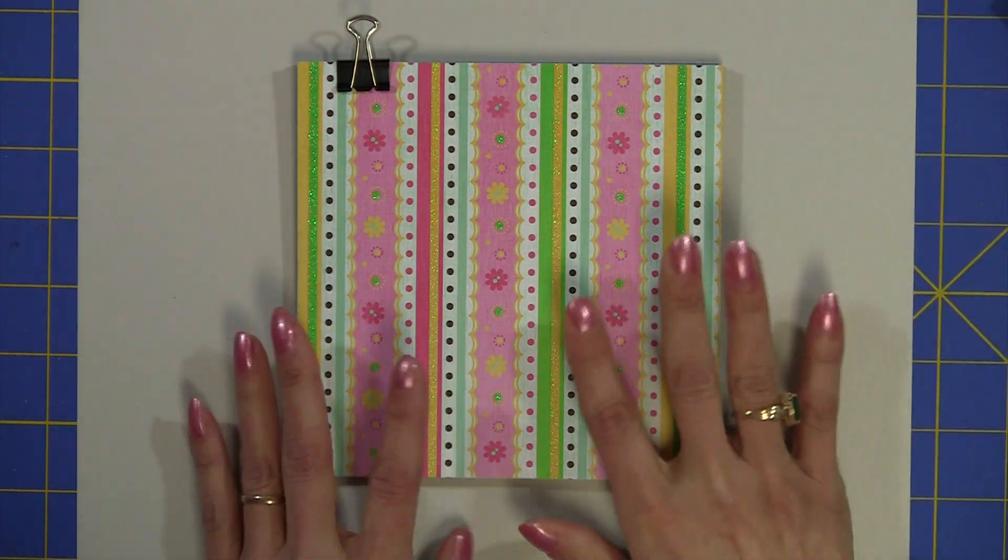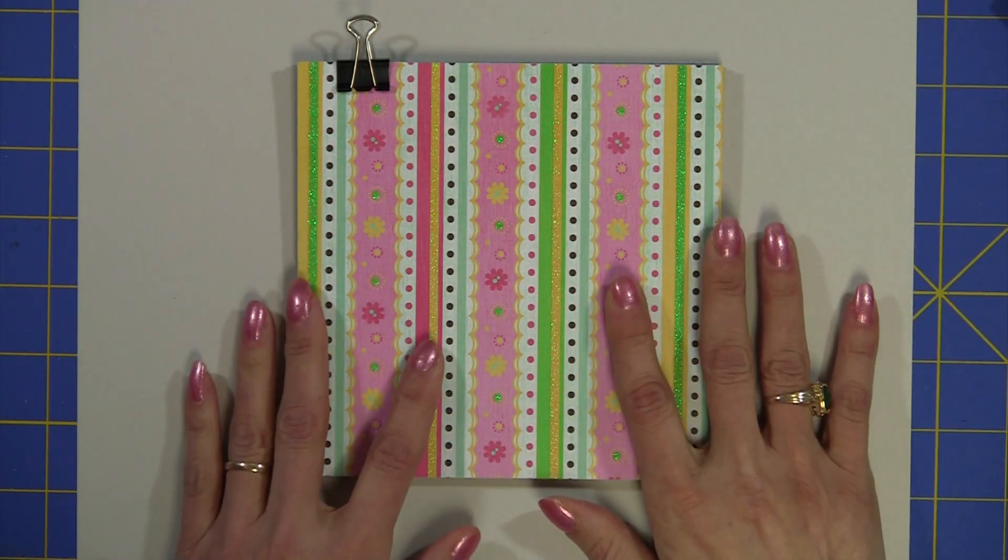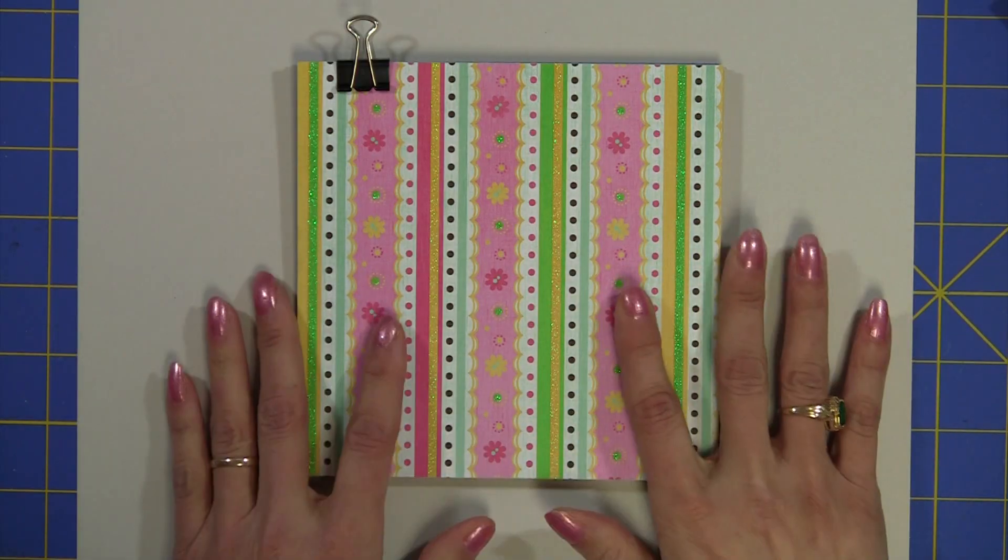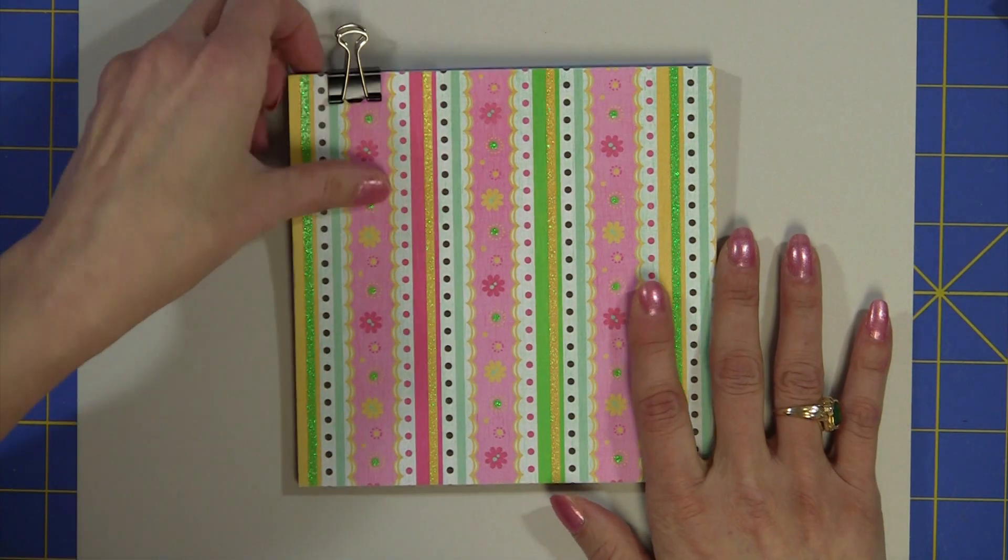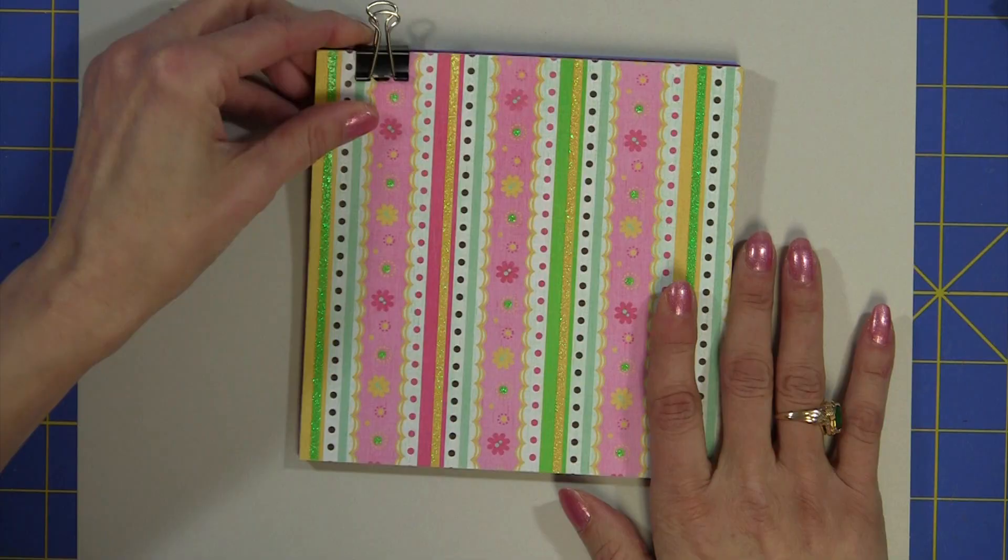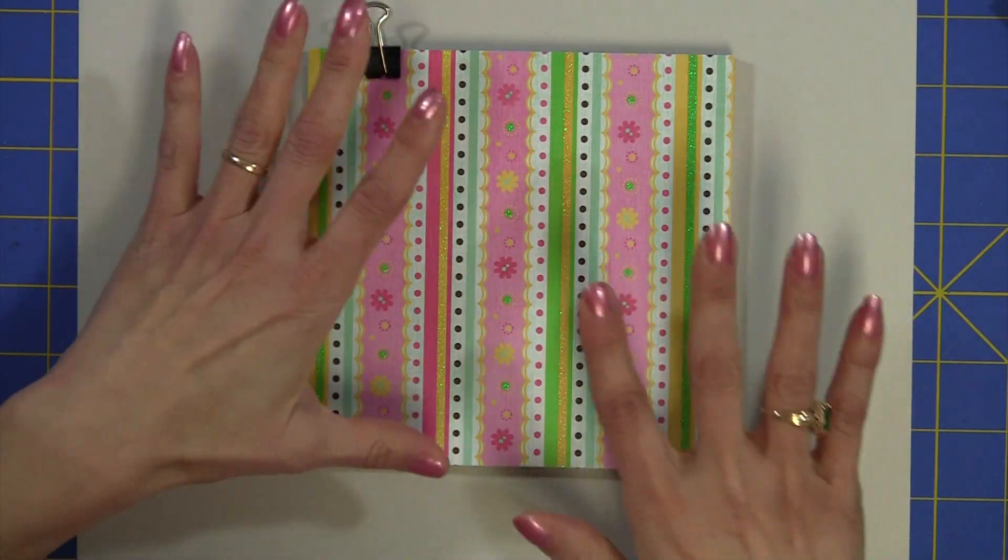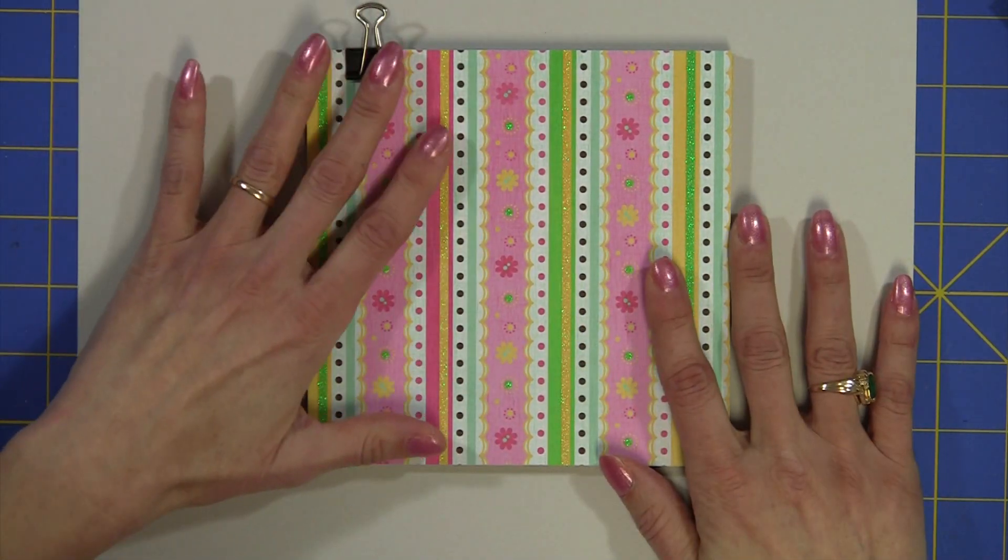And then what I did is I just cut a bunch of 6x6 inch square pieces of scrap paper and I used a binder clip to hold the papers while wrapping them so it'll make them a little bit more sturdy.